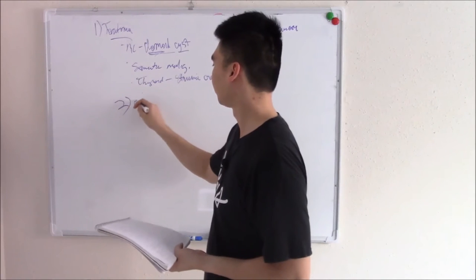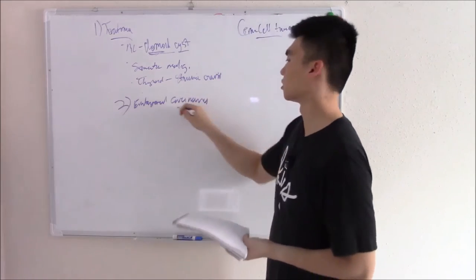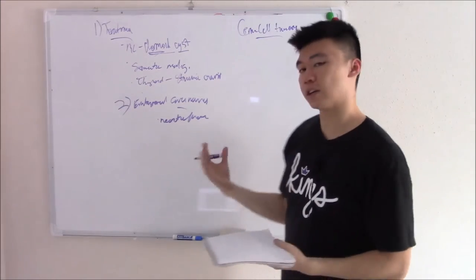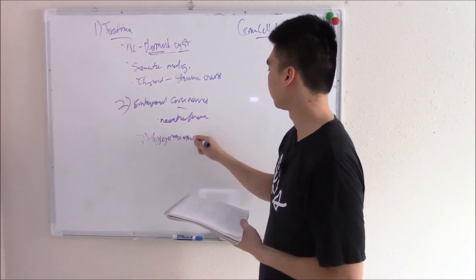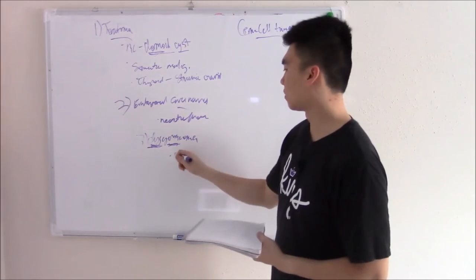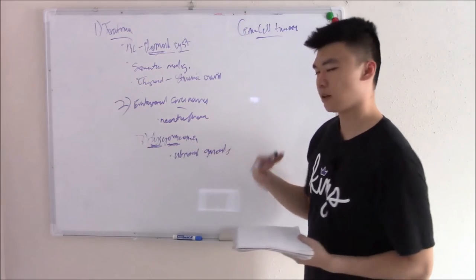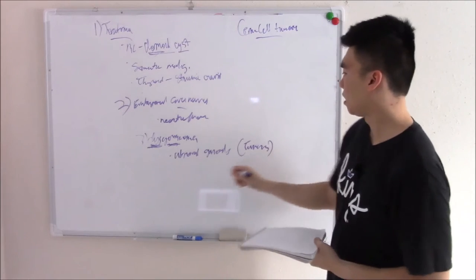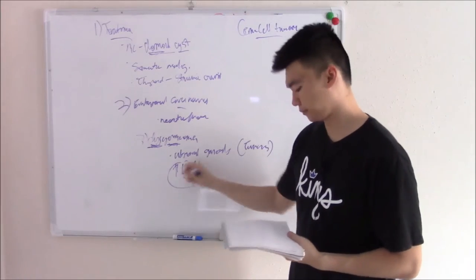You can also have embryonal carcinoma - not much to know other than it's aggressive, very aggressive, metastasizes early. Another one is dysgerminoma. What's in a name? Dysgerminoma - abnormal germ cells from abnormal gonads. Can you think of some syndromes with abnormal gonads? How about Turner's? One of the signs is increased biomarkers like LDH. Very important you know LDH.